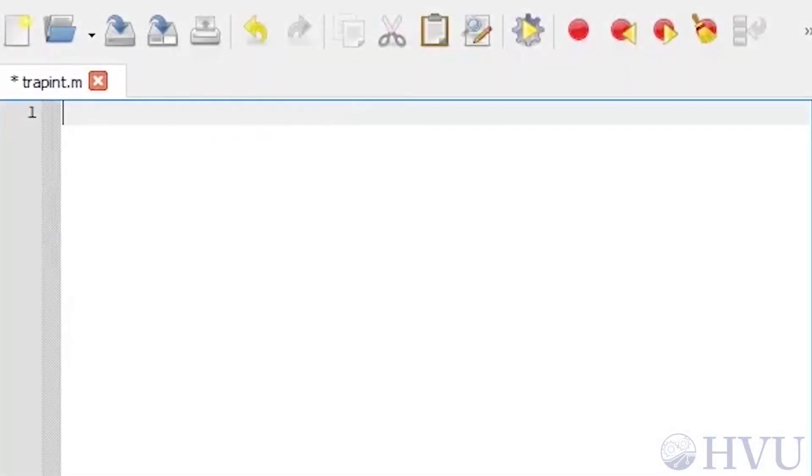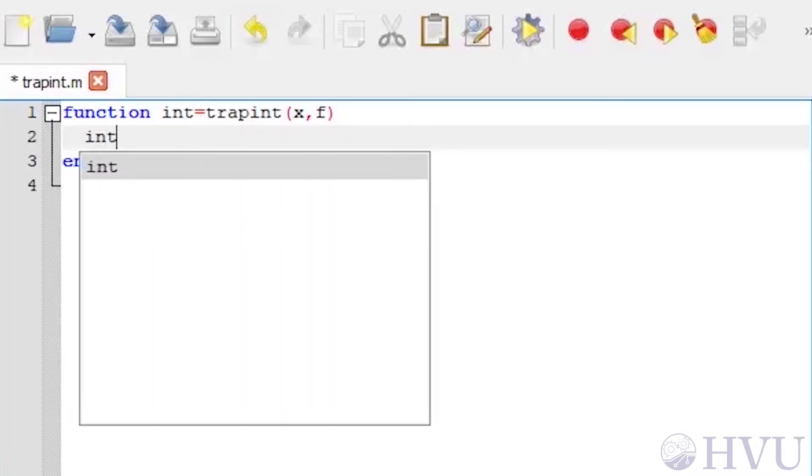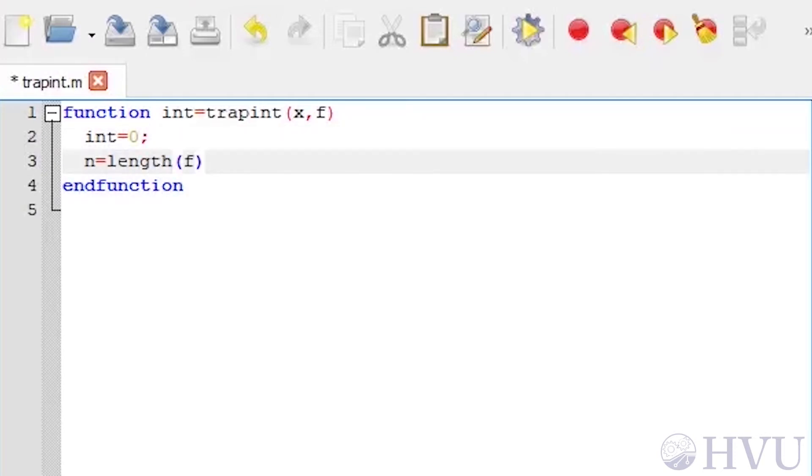I'll name my trapezoidal integration function trapint.m. Since I'm creating a function, the first line has to be a function declaration statement. My output variable is named int, the function name is trapint, and it accepts two input arrays, x, the values of the independent variable, and f, the values of the function at the given values of x. First, I need to initialize the value of int to zero, and determine the number of points in the arrays.